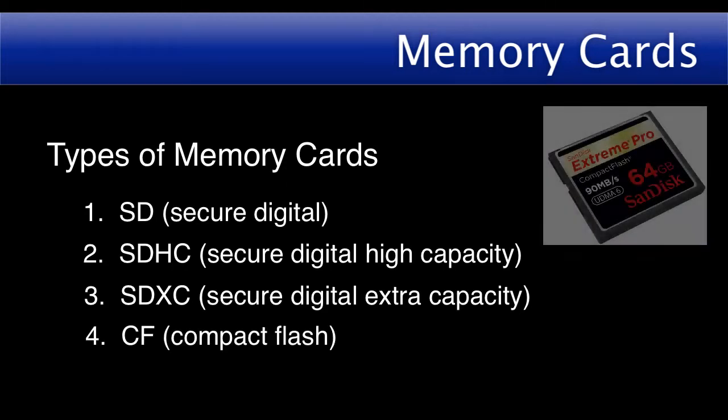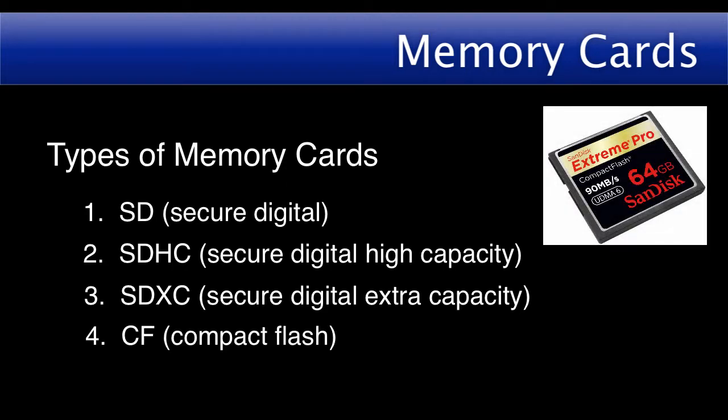Compact Flash Memory Cards, or CF Memory Cards, offer very high storage capacities and fast processing times. They were first introduced by SanDisk in 1994 and were very widely used, but now they are usually only found in the most advanced DSLRs. Canon chose Compact Flash as the recording media for its new lineup of professional high-definition video cameras.